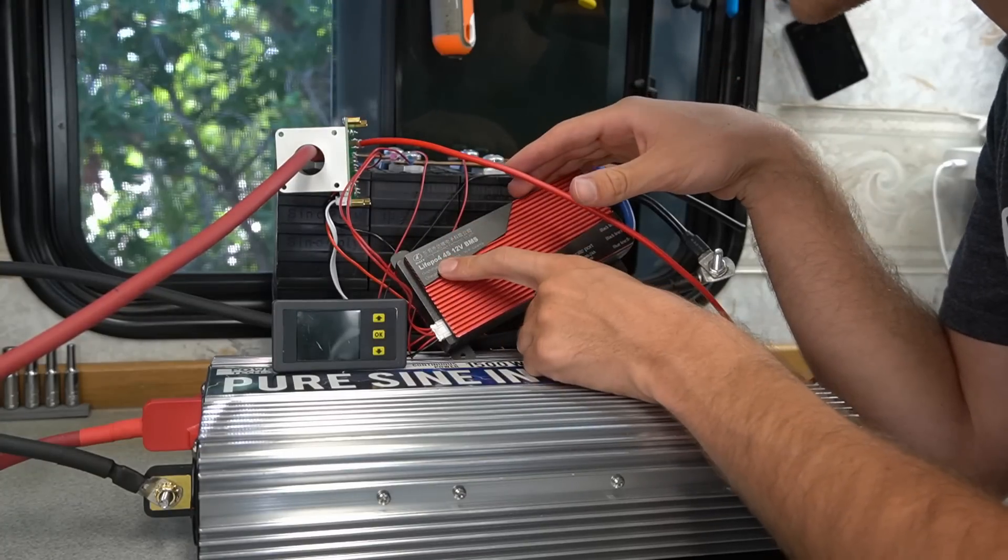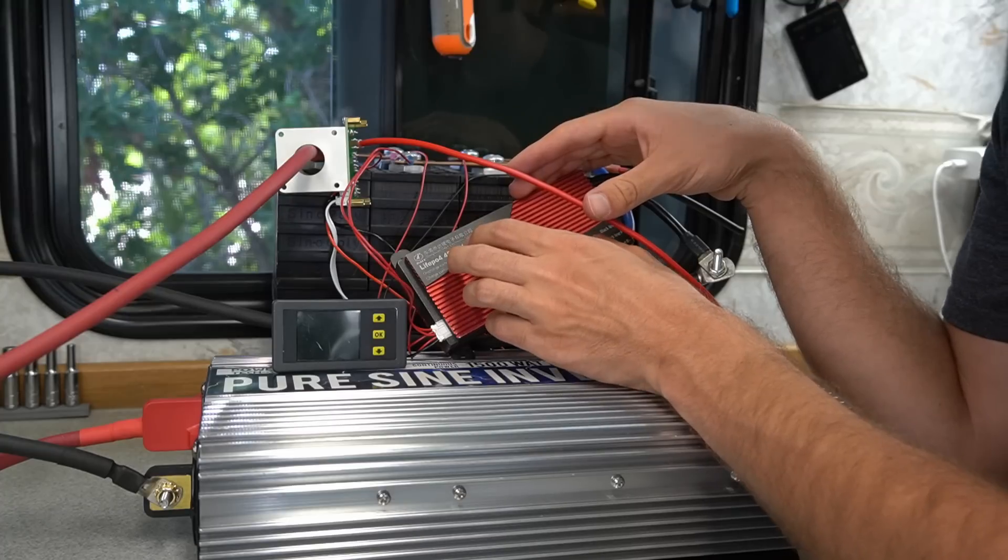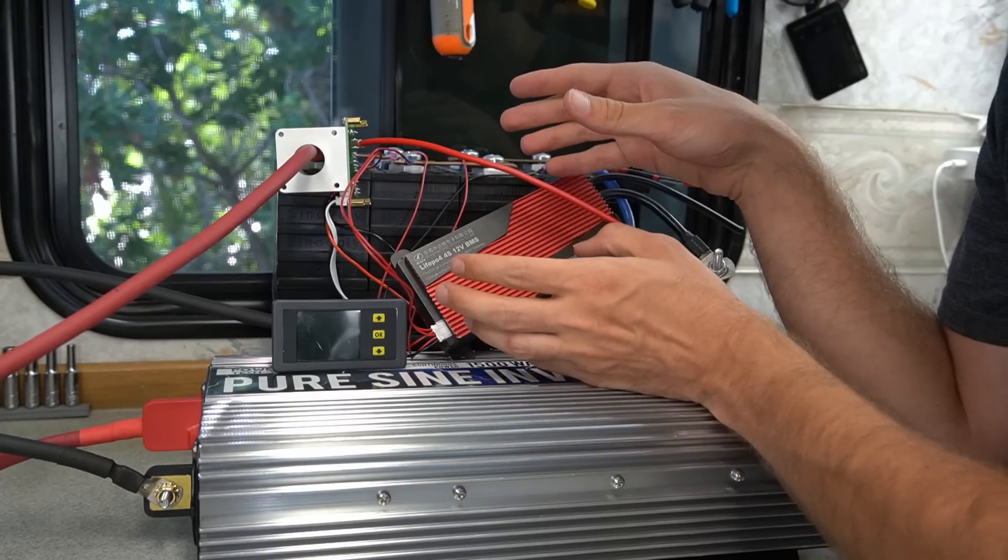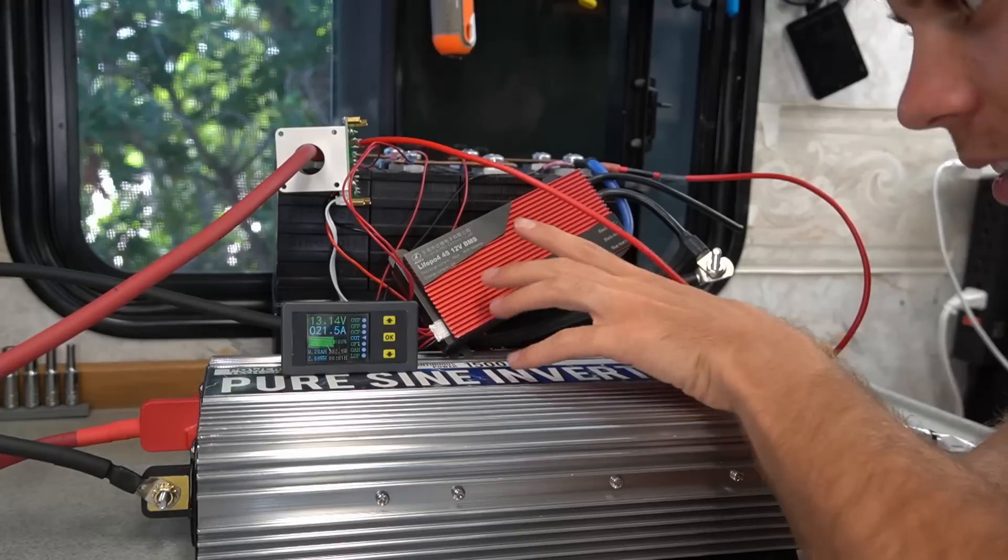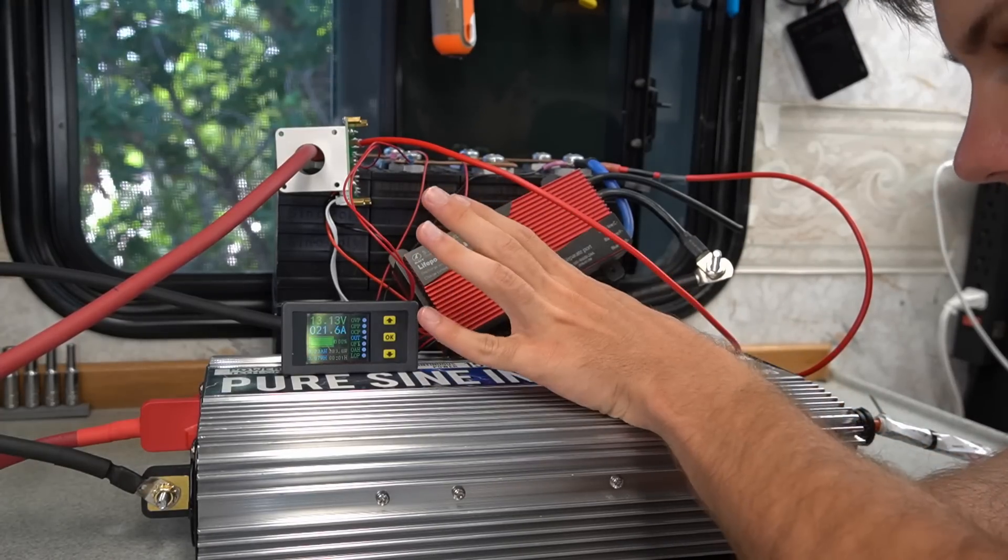For this battery we're going to use a 100 amp DALY BMS. And this is the same size amp capacity as the other ones that we're testing. So I think that will be fair. And this is the same rate as the previous batteries because this is a 100 amp hour. So everything's the same.